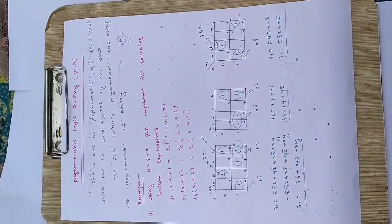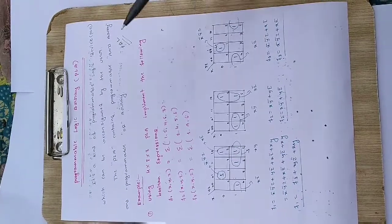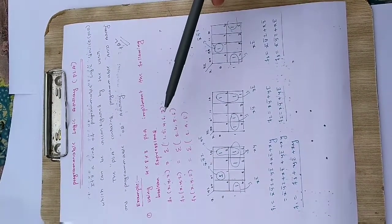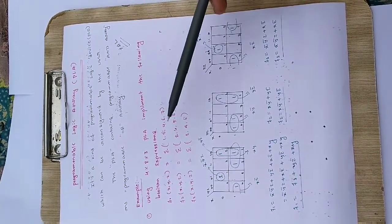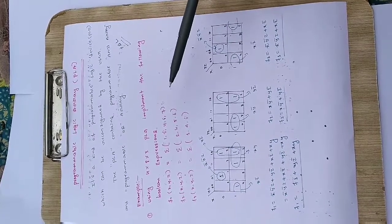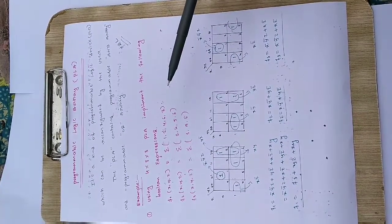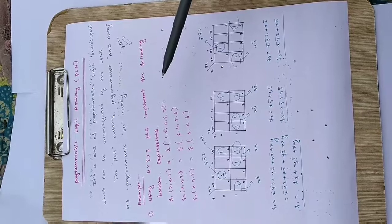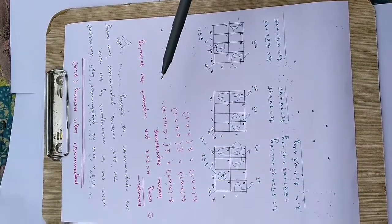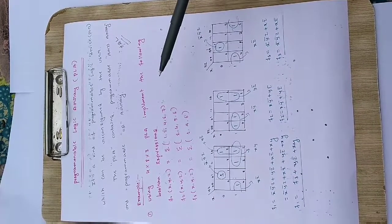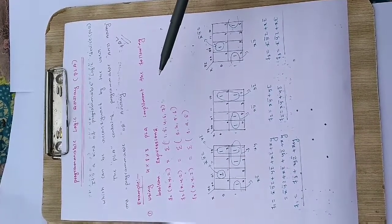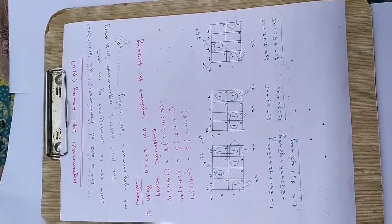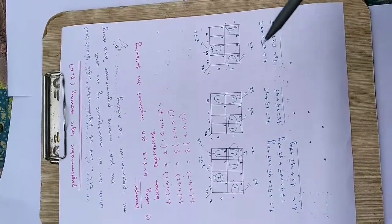X, Y, Z are the variables. The min terms given are: 1, 2, 4, 6, 7 for the first expression F1; 2, 4, 5, 6 for the second expression F2; and 1, 4, 6 for the third expression F3.